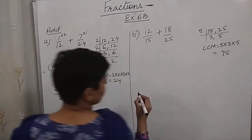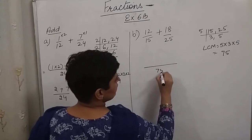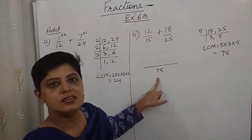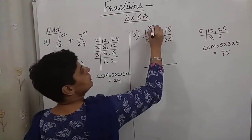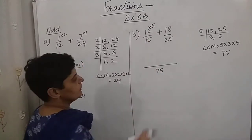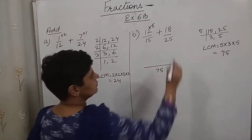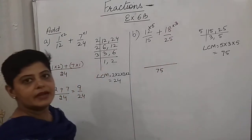Now in this case, LCM is 75. 15 should be multiplied by which number to get 75? 5. So the same number will be multiplied with this. 25 should be multiplied by which number to get 75? 3. So we are multiplying it with 18.